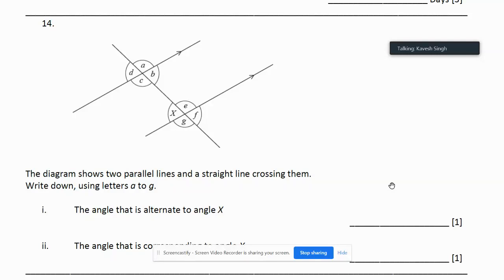So question 14 over here, the diagram shows two parallel lines. We can see the parallel lines there, and a straight line crossing them. Write down using letters a to g the angles which is alternate to angle x. So use angle x over here.